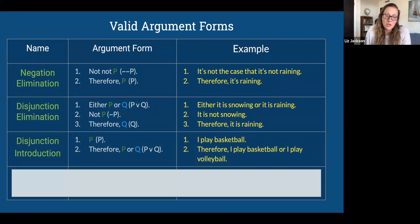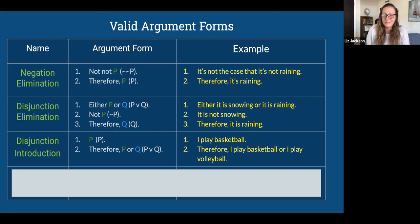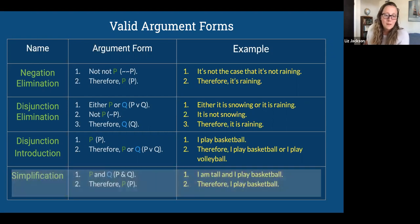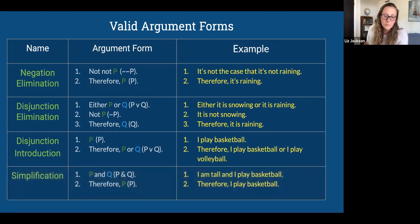Next is disjunction introduction — disjunction means 'or.' If you know P, you can conclude P or Q. If I play basketball, I can conclude I play basketball or I play volleyball, because an 'or' is true if at least one of the two things is true. Then there's simplification: from P and Q, you can conclude P. So if I say I'm tall and I play basketball, I can conclude that I play basketball.